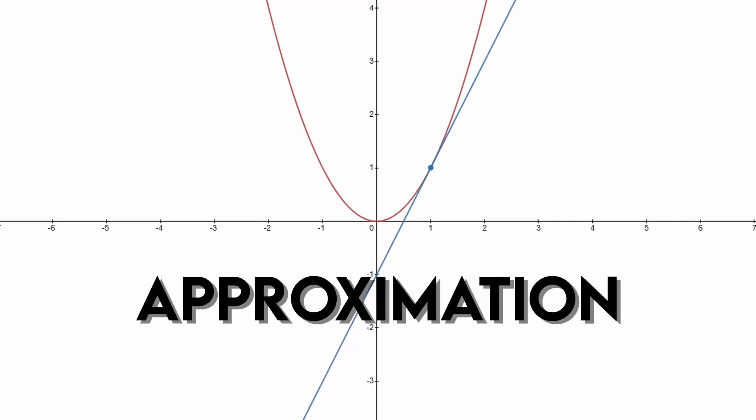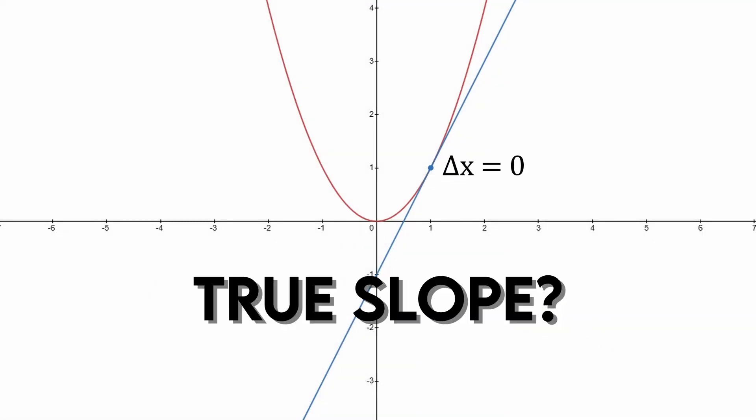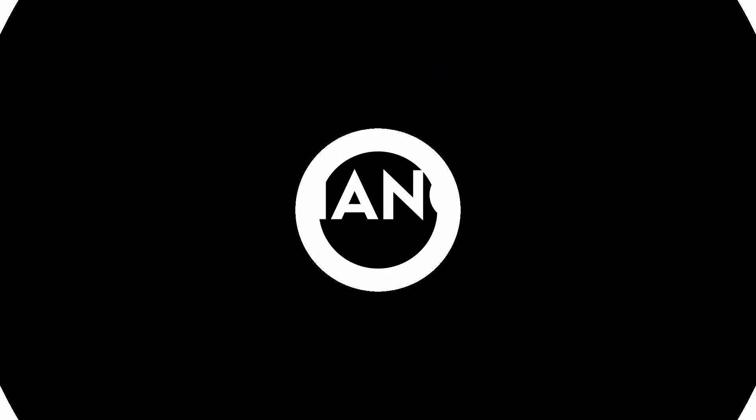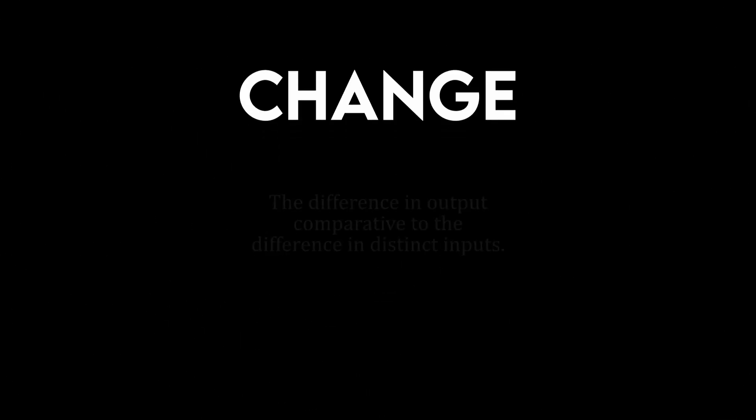Is there a way to calculate the change at a point? The instantaneous change? How can change be instantaneous when change is defined as a difference occurring through time?